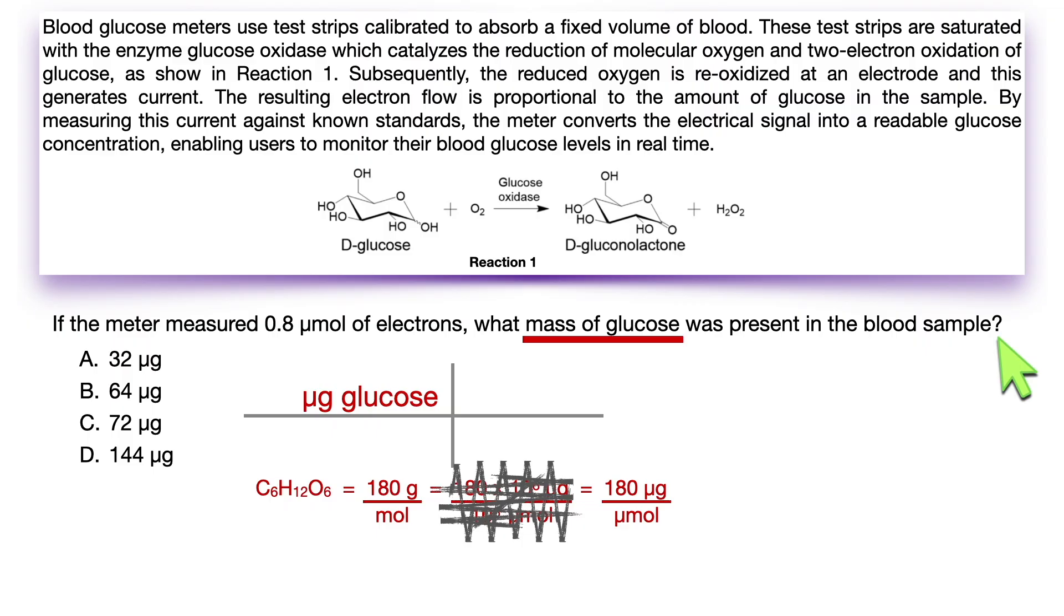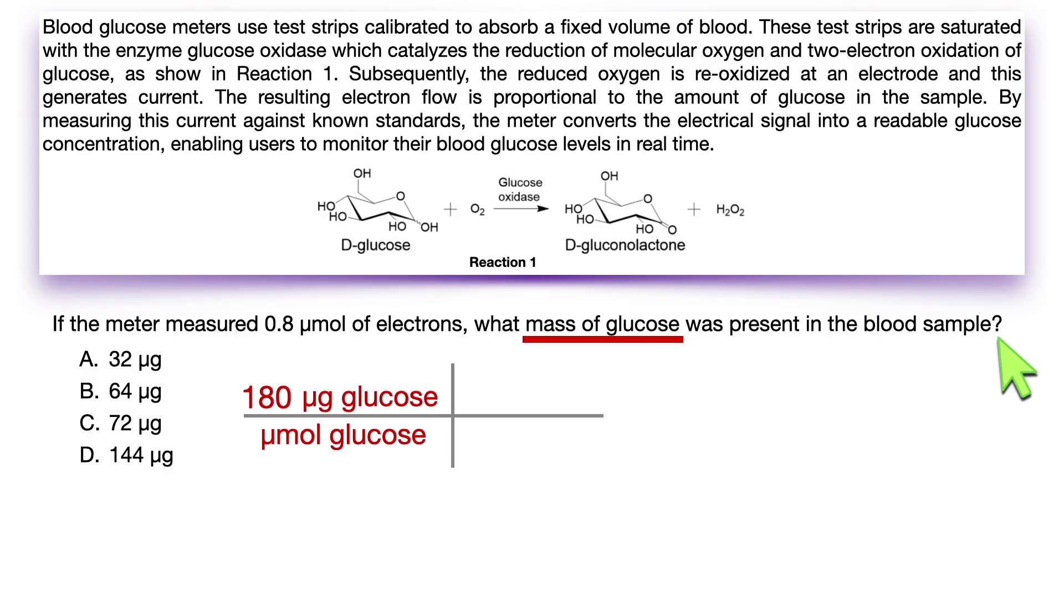So we're actually starting stoichiometry with 180 micrograms of glucose over micromole of glucose. I know it's tempting to jump to the passage at this point, but wait just one more second.